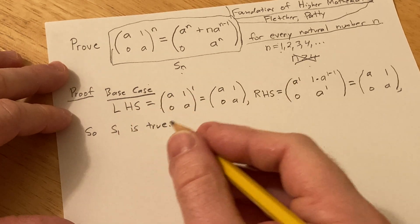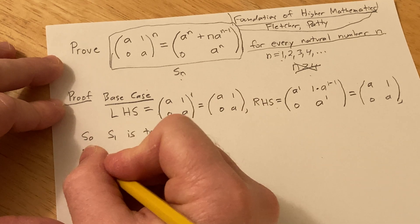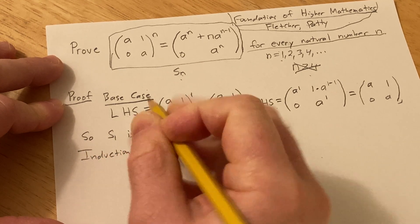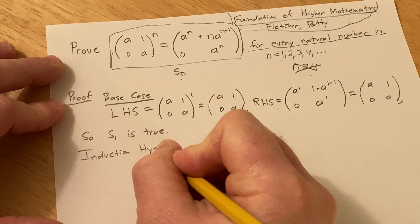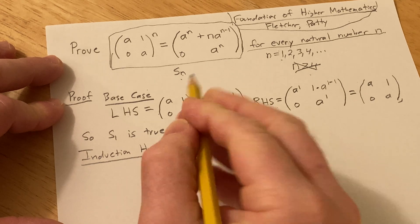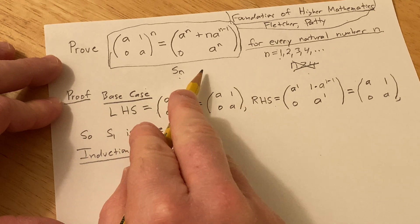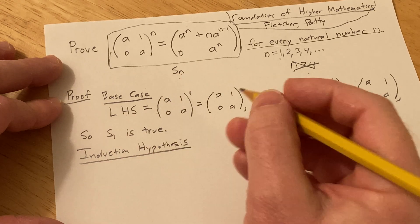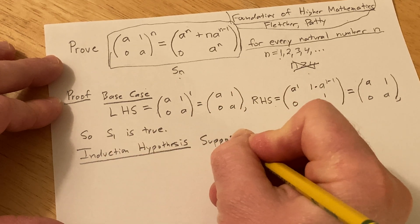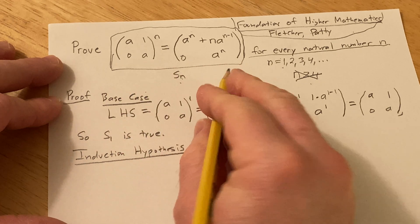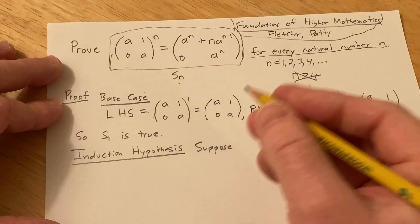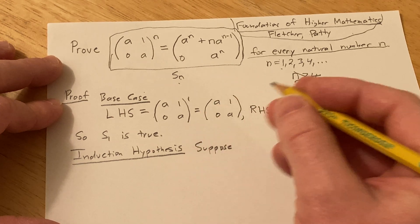The next step in an induction proof is the induction hypothesis. This is where you assume that your statement is true for some natural number. So I'll say: suppose S sub k is true — basically you just put a k where all the n's are. So you assume your statement is true for some k.